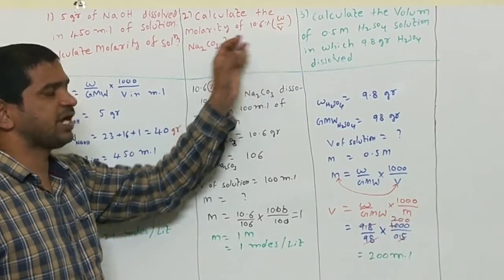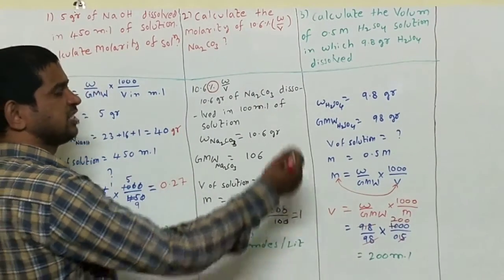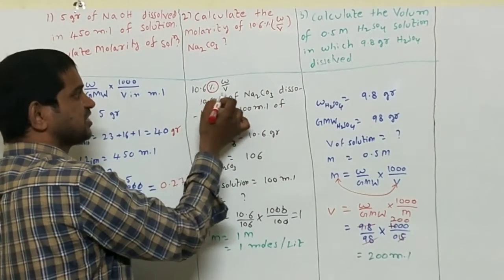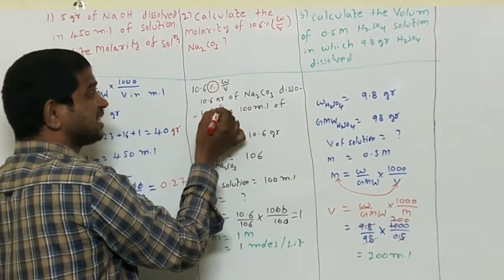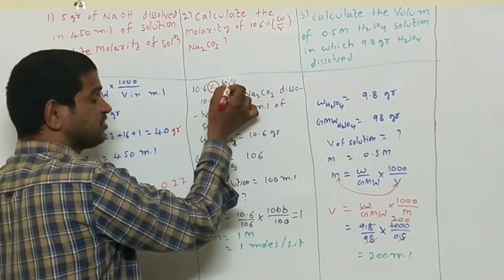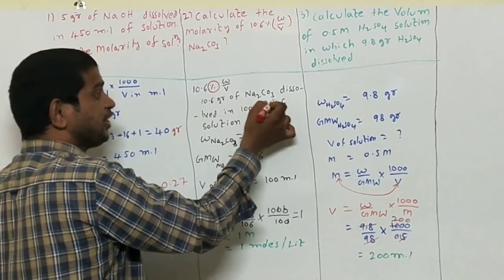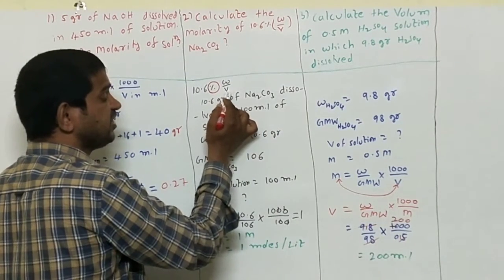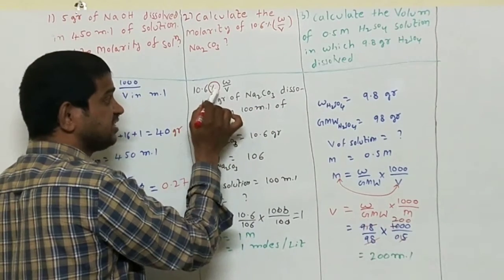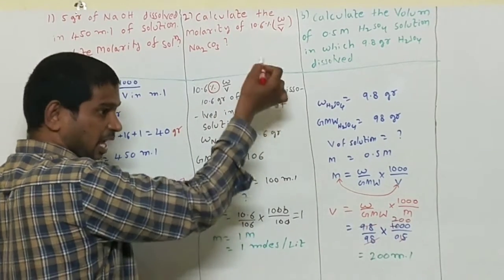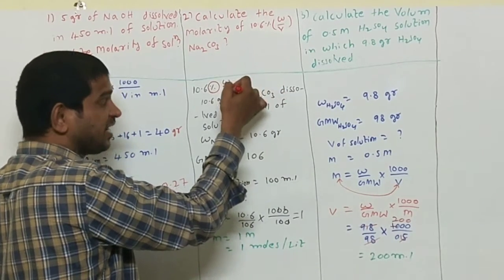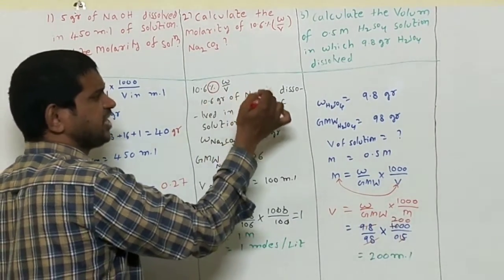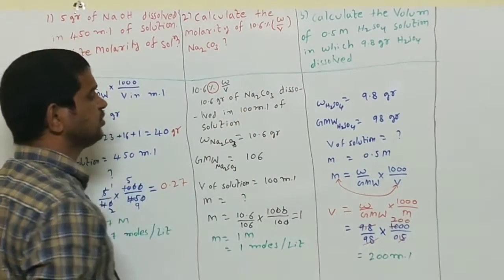In this question, 10.6 percent w/v is given. This means 10.6 percent w/v means 10.6 grams of Na₂CO₃ — that is the weight — is dissolved in 100 ml of solution.